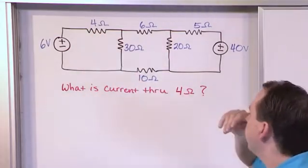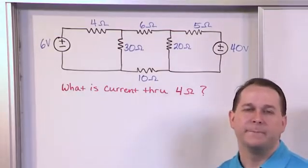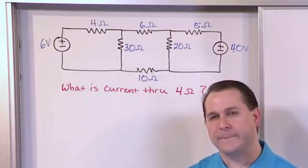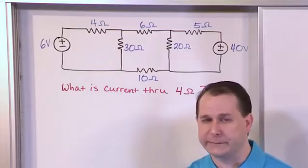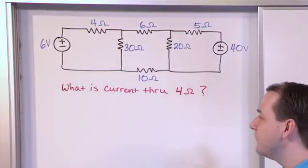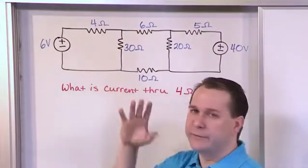Here's the 4 ohm resistor here. Now we've done enough of these circuit problems for you to probably realize that this is not a very complicated circuit and you could use lots of other techniques to find the current through this resistor.